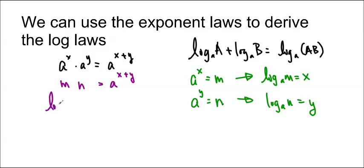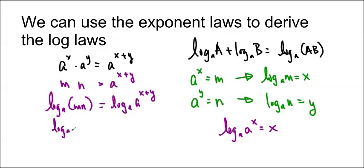Now we're going to log both sides with base a. And don't forget to put brackets around your argument. So log base a of a to the x plus y. And now we're going to use the rule that we derived just now. We said that log base a of a to the x is equal to x, right? So that means that log base a of a to the x plus y is actually equal to x plus y.